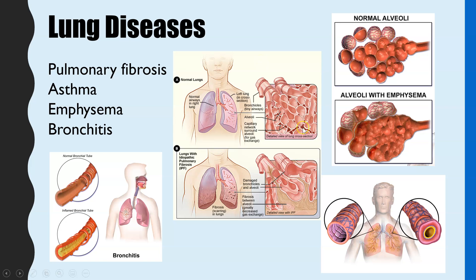Here we have someone with pulmonary fibrosis. We can see again there's been a breakdown of those alveoli and you start to get these really thick walls as well. The issue here is very similar: there's a smaller surface area and thicker walls, so they're not going to be able to expand as much either.